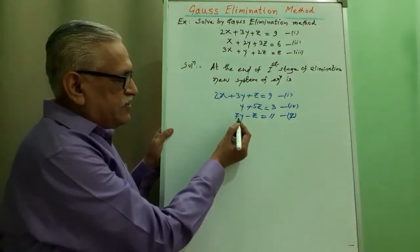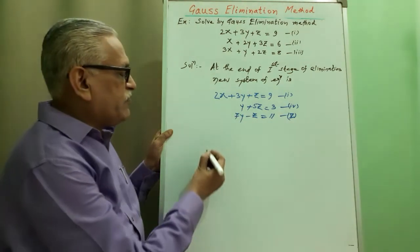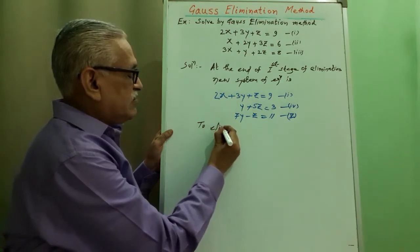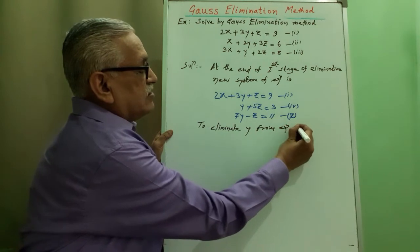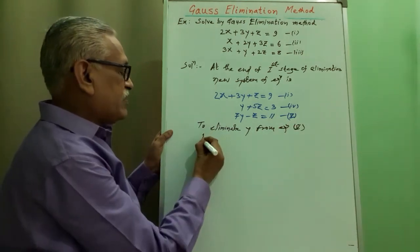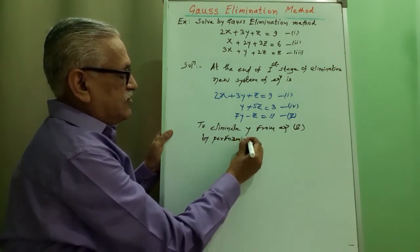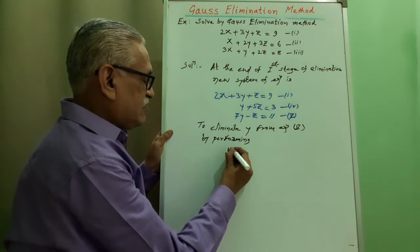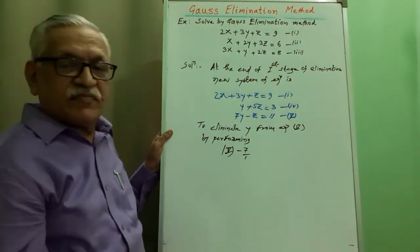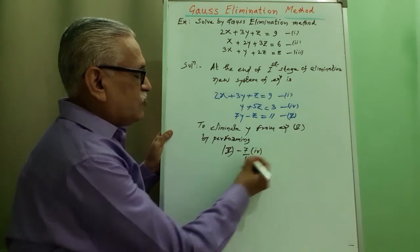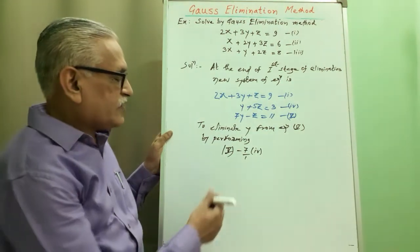In the second stage of elimination, we eliminate y from equation 5 with the help of equation 4. By performing equation 5 minus multiplying factor 7 by 1, that is 7, into equation 4 — we multiply equation 4 by 7 and then subtract it from equation 5.